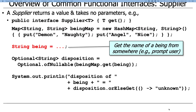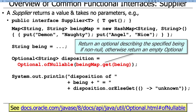We're going to get the name of a being from somewhere — read it from a file, prompt the user, get it over a network, whatever. We have a being, and we want to look up that being to see what its disposition is. If it's a being in the map, we find out its disposition and print it. But what if we get a being that's not in the map — a hobbit, a troll, a wizard? We want that not to fail. Looking up an unknown being in the map will return null.